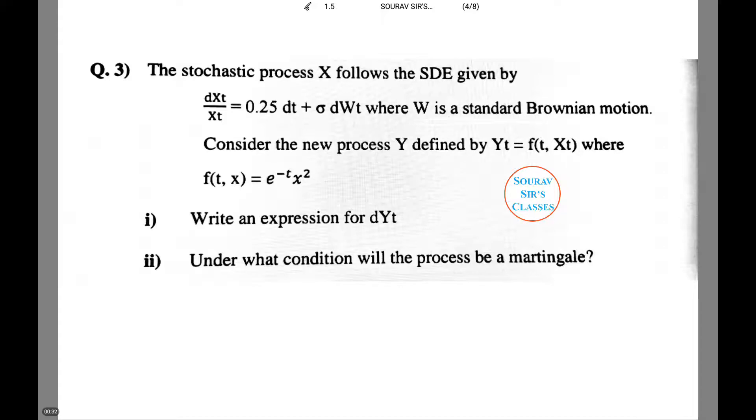Now we need to consider the new process Y defined by Yt equals f(t, Xt) where f(t,x) equals e to the power minus t times x squared. Now we need to write an expression for dYt.